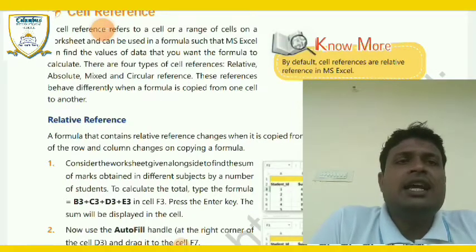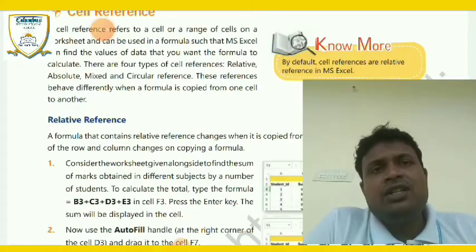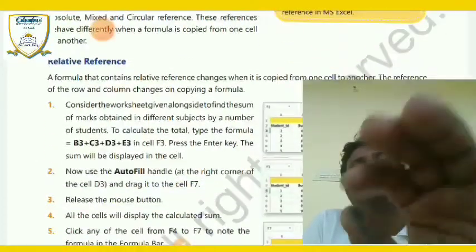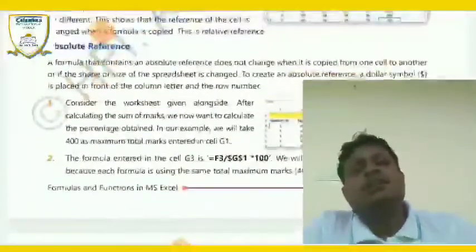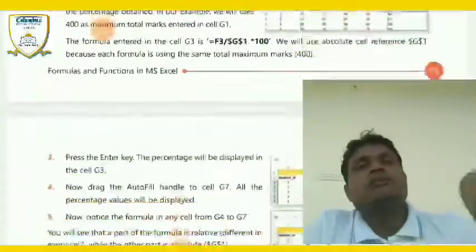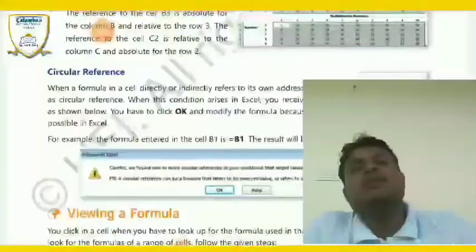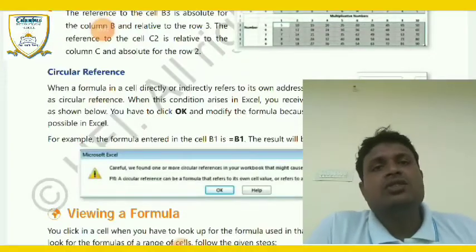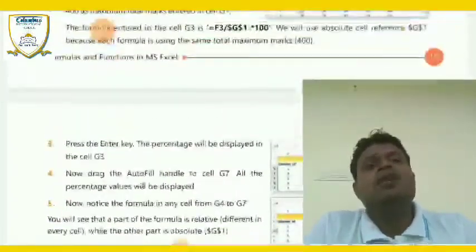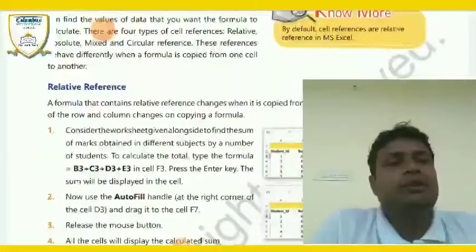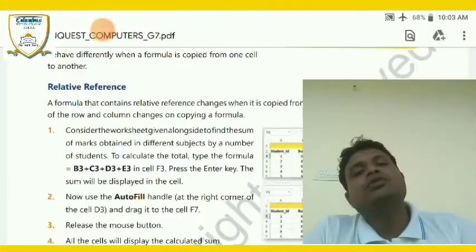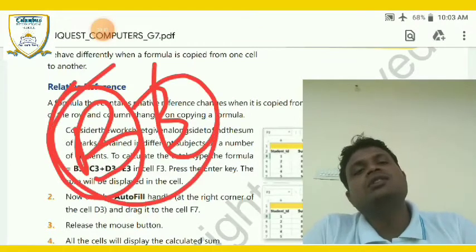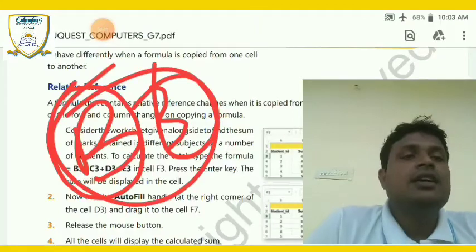A cell reference refers to a cell or a range of cells on a worksheet and can be used in a formula. There are four types of cell references: relative reference, absolute reference, mixed reference, and circular reference. For example, B3 means column B, third row — that is the reference.